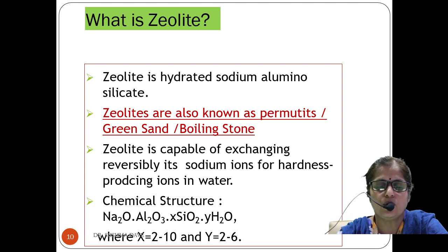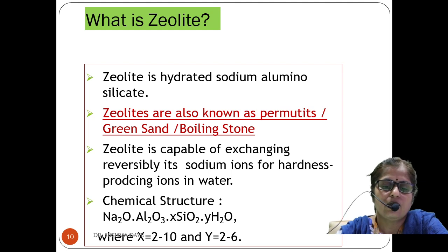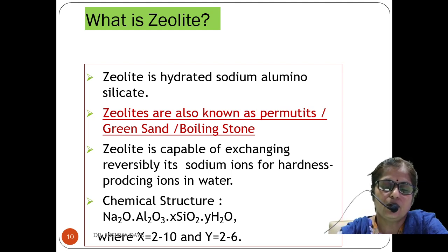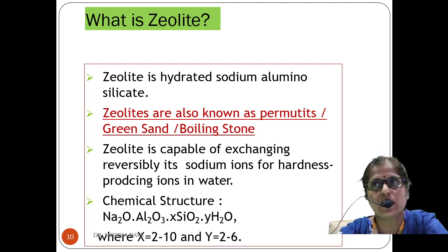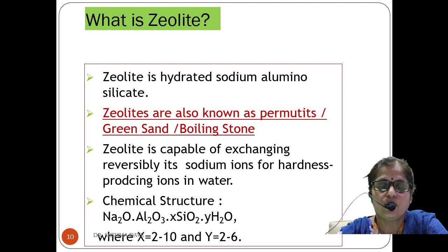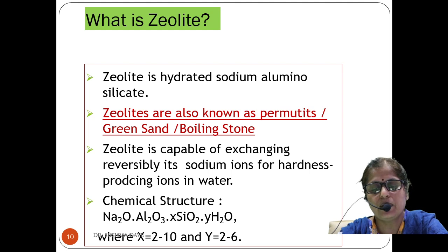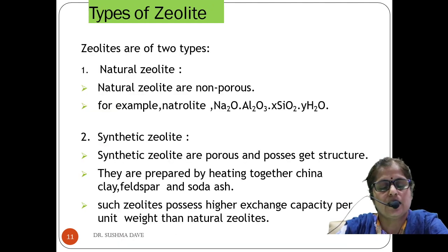The general formula of zeolite is Na₂O · Al₂O₃ · XSiO₂ · YH₂O, where X ranges from 2 to 10 and Y from 2 to 6. That means the molecules of SiO₂ may be from 2 to 10 and those of water from 2 to 6.